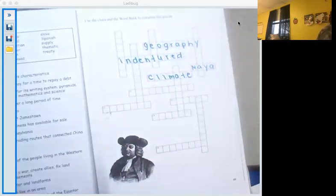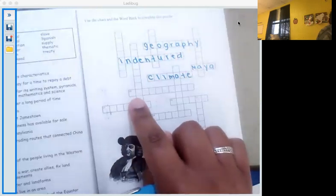All right. Number 10 across. The number of people living in an area.